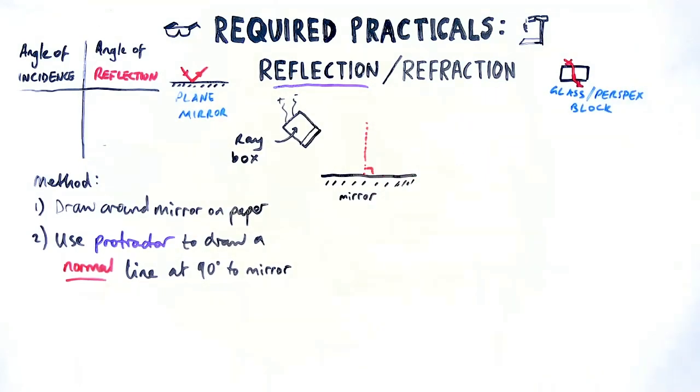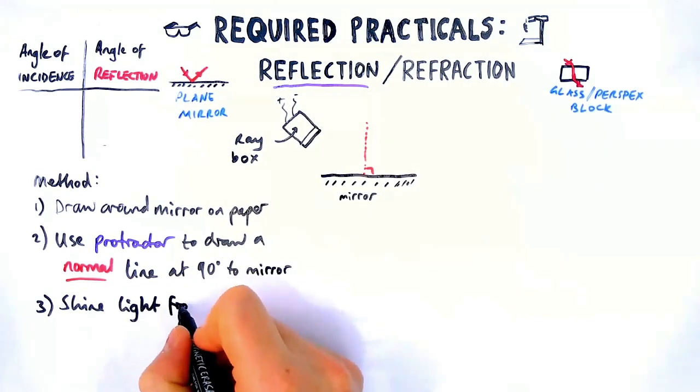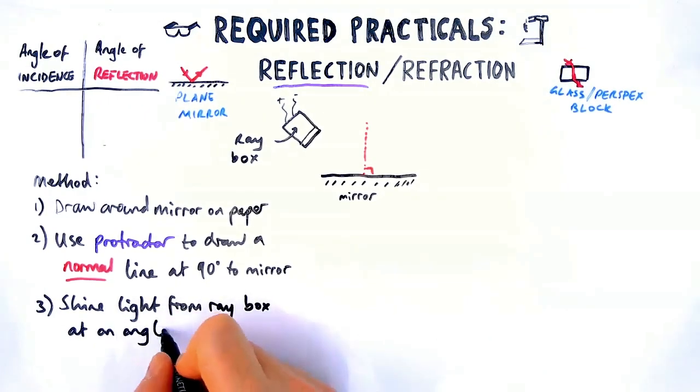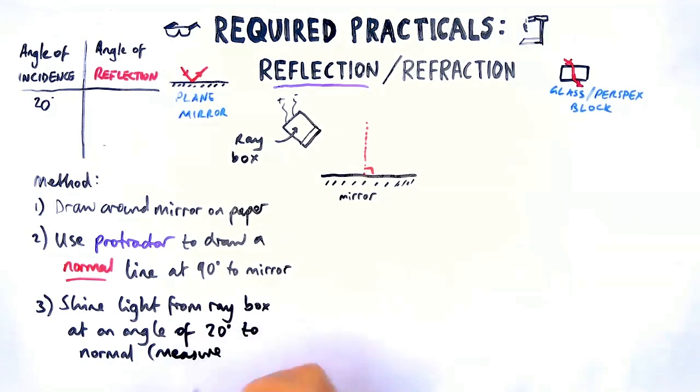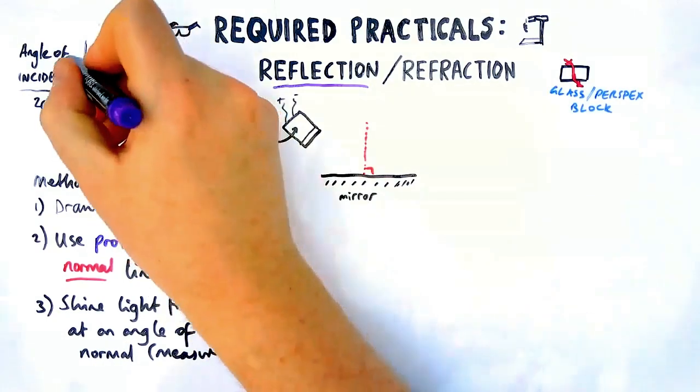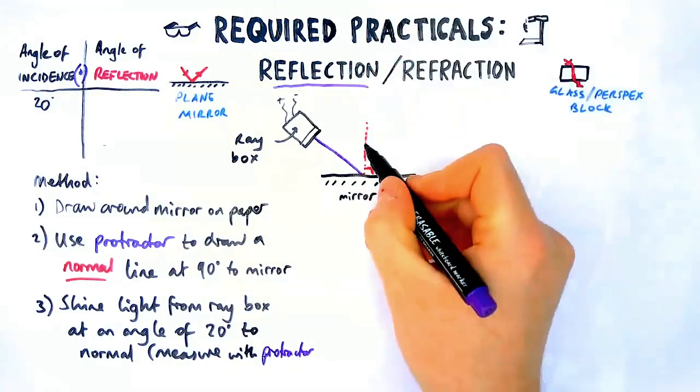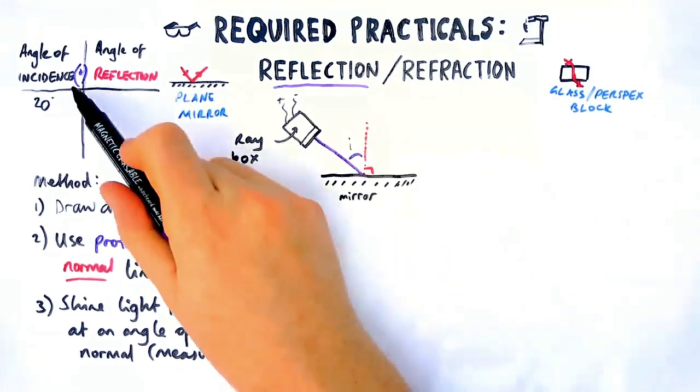Step three, you're again going to shine the ray box or shine the light from the ray box at a certain angle, depending on if they give you results or not. But let's start at an angle of 20 degrees between the ray box and the normal. So let me show you on the diagram what that looks like. Obviously measure with a protractor. The angle would be between the ray and the normal. I know that angle is not 20, but let's assume it is. Now that's our angle of incidence if you get a table with results in.